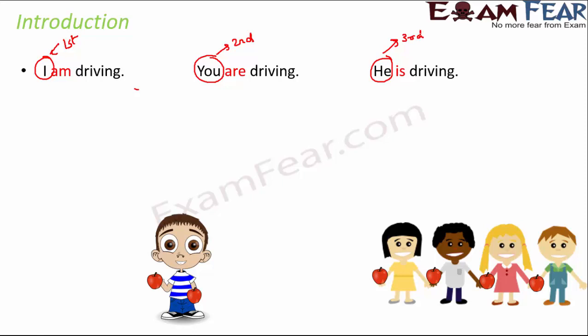So we see that I, you, he — these are three different persons. What happens to the verb? In the first example, the verb is 'am'; in the second example, the verb is 'are'; in the third example, the verb is 'is'. So the verb changes, and why does the verb change? The verb changes as the person of the subject changes.